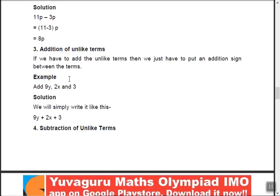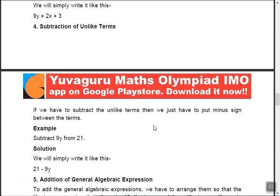Addition of unlike terms: for example, 9y plus 2x plus 3 — these cannot be added since they are unlike terms. If you have to add unlike terms, just put the plus or minus sign between them and keep the expression as it is. You cannot do anything else. The same logic applies to subtraction of unlike terms.